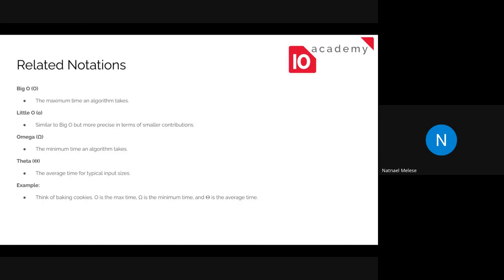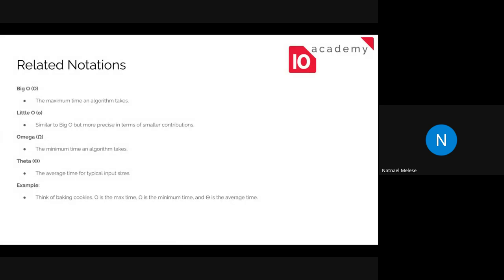The related notations are: Big O, which is the maximum time an algorithm takes; little o, similar to Big O but more precise for smaller contributions; Omega (Ω), which is the minimum time an algorithm takes; and Theta (Θ), which is the average time for a given input size. For example, using baking cookies as an analogy: Big O is the maximum time, Omega is the minimum time, and Theta is the average time it takes.